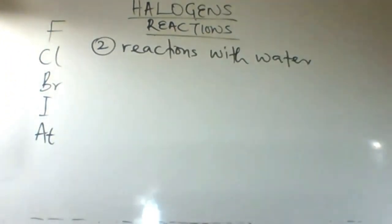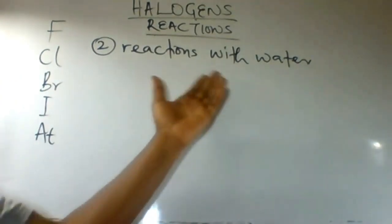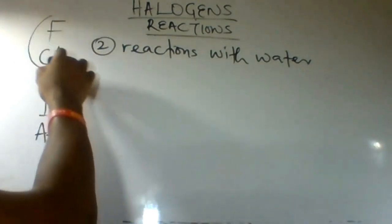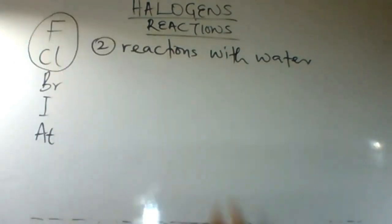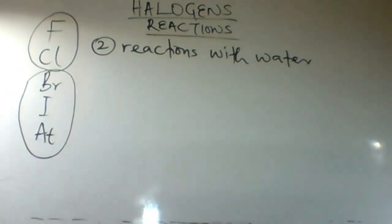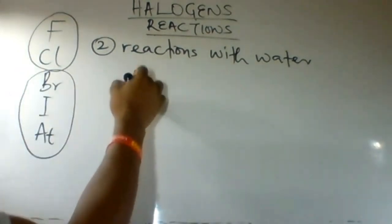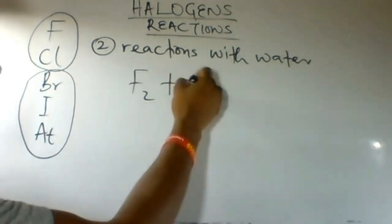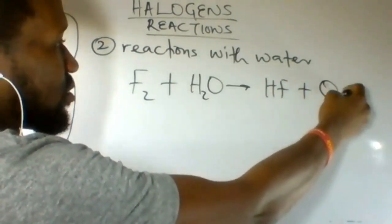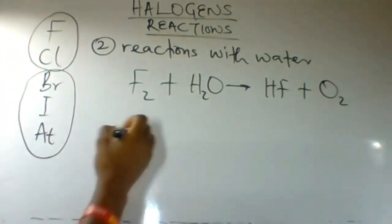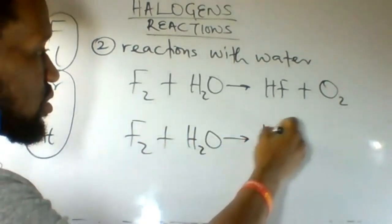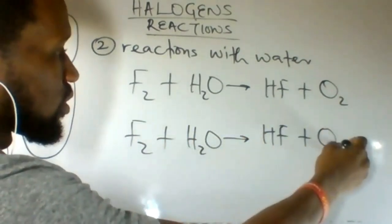The two most reactive halogens can react with water because they have a larger reduction potential. Fluorine and chlorine can react with water to form products. Bromine, iodine, and astatine cannot react with water because they cannot displace oxygen. When fluorine reacts with water, it forms hydrogen fluoride and oxygen gas, but it can also react with water to form ozone, giving HF and O₃.